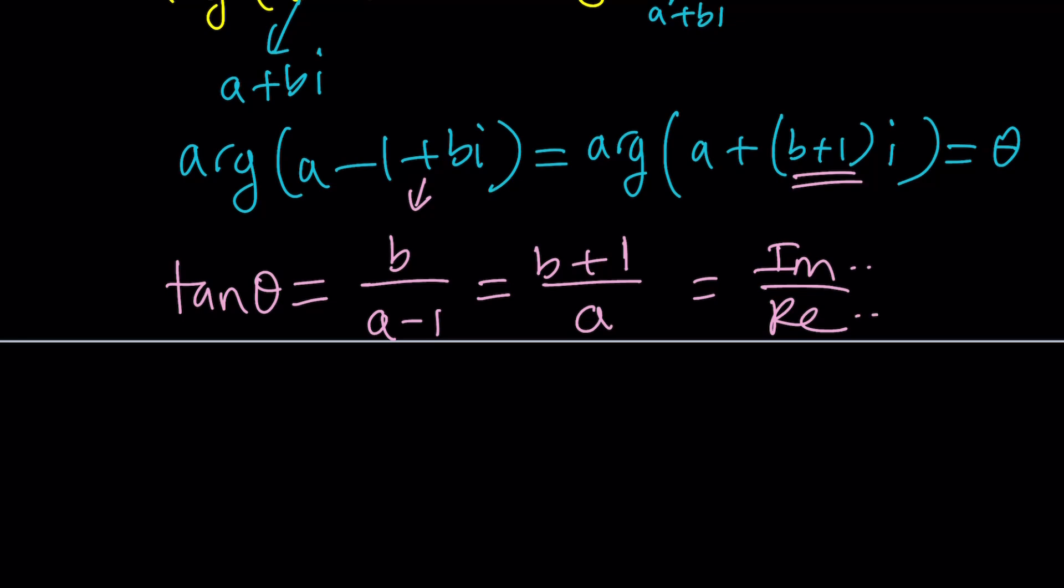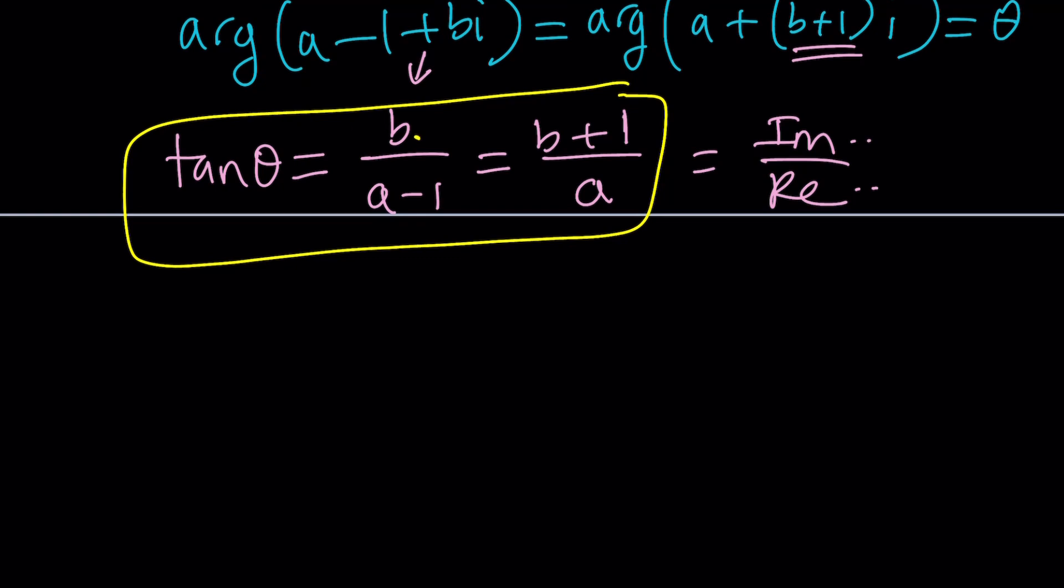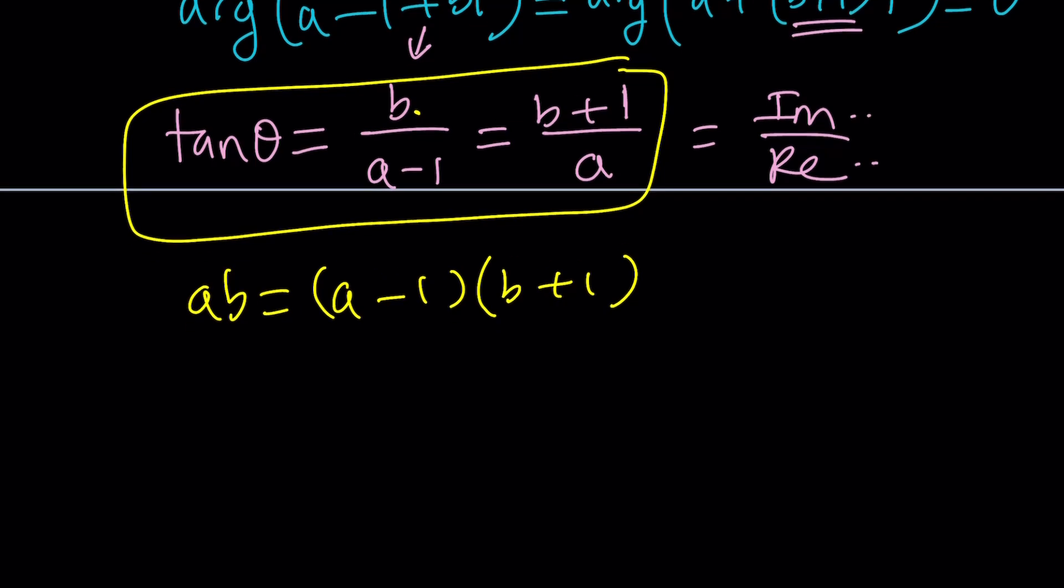Now, this equation is going to give us pretty much everything we need. So let's go ahead and work it out. Cross multiplication, right? A times B is AB. And then we're going to multiply A minus one by B plus one. So it's kind of funny, because you're thinking of two numbers, two real numbers, such that when you multiply them, the answer does not change if you decrease the first number by one and increase the second number by one. Make sense? So those are the types of numbers we're looking at. So let's go ahead and simplify this.